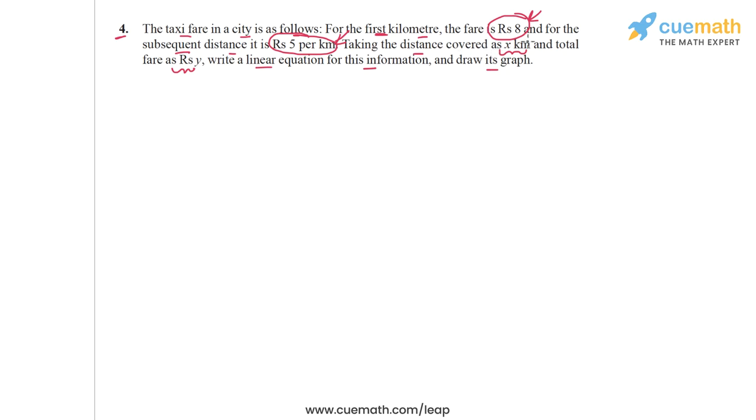So basically, the total distance covered is x kilometers and the total fare is rupees y. We have to write an equation which relates y with x — it will be a linear equation in these two variables — and then we have to draw its graph.